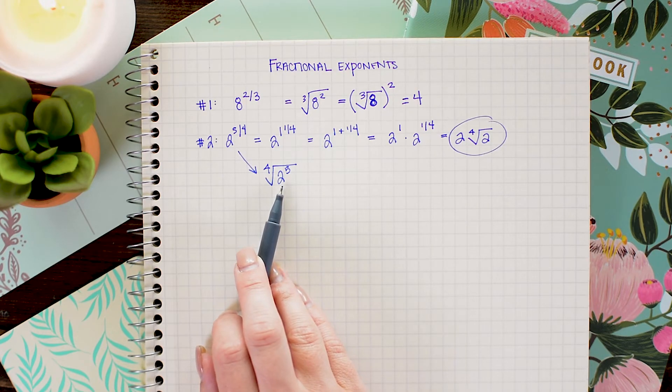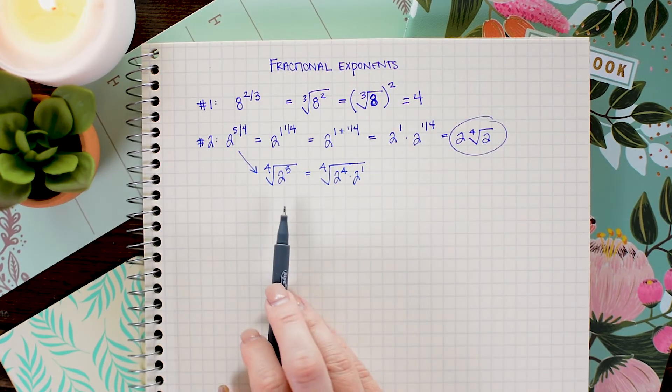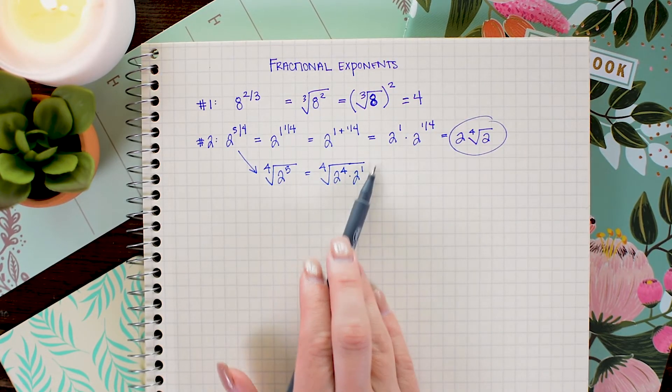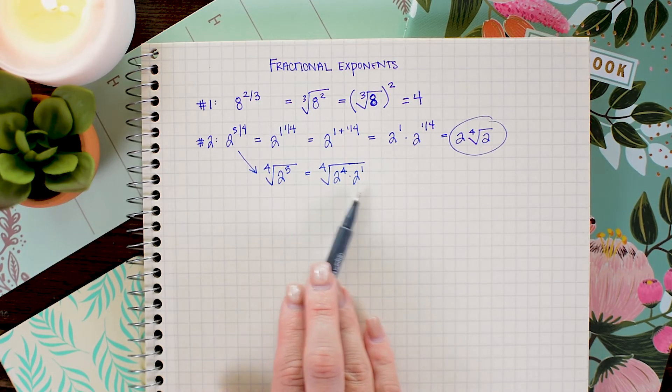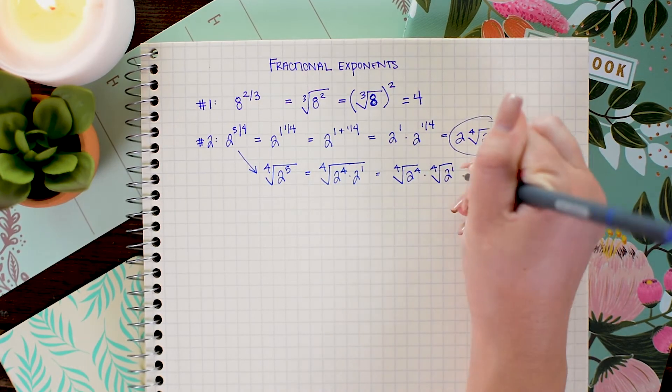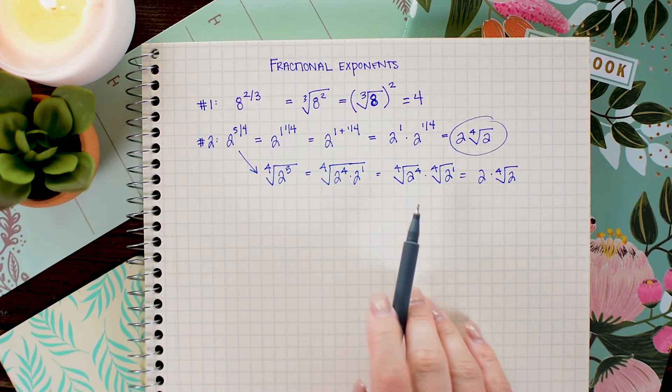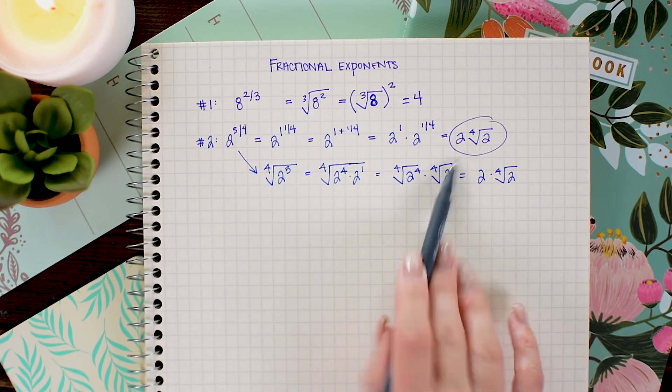And then from there I know that every group of 4 will reduce. So because I have 5 twos multiplied together, I'm going to split out a group of 4 of those. So that gives me 2 to the 4th times 2 to the 1st underneath this radical. And of course, I can split this into two separate radicals and simplify. So then I get 2 times the fourth root of 2, which is exactly what we had in this situation.